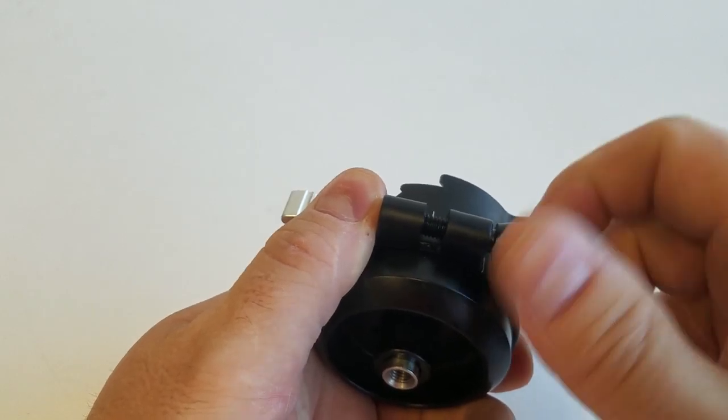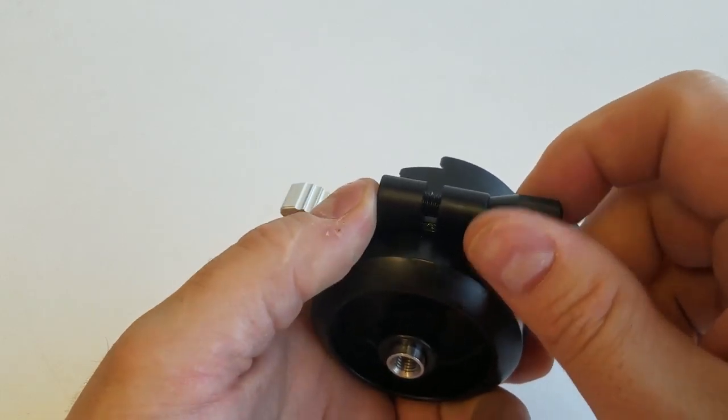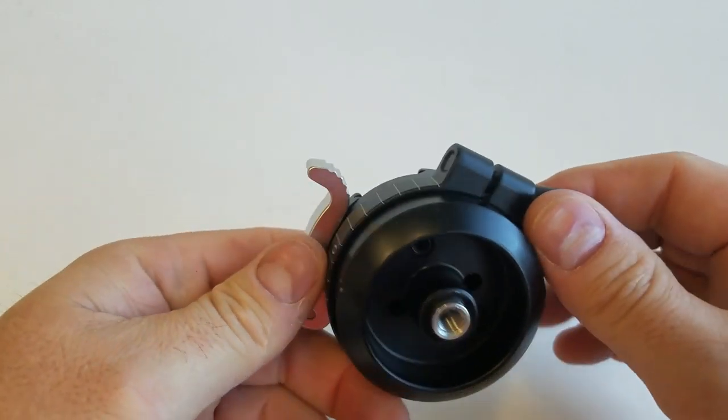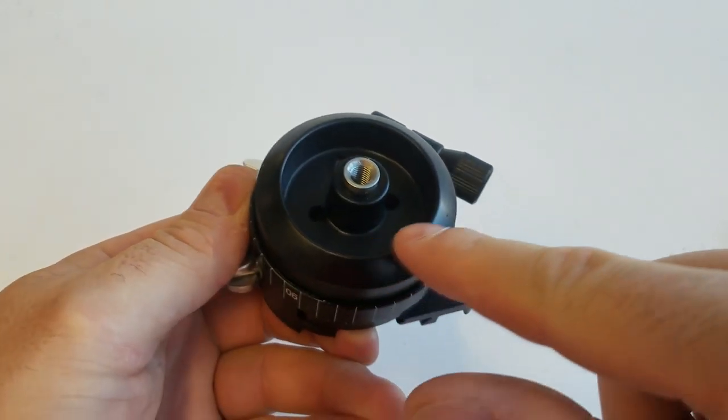Again, you do want some sort of lubrication in there, grease or graphite or something like that. You also want a little bit around this ring to go in your bolt.